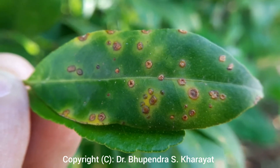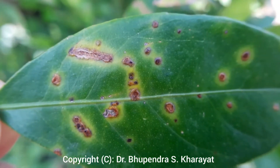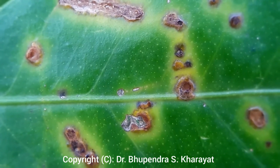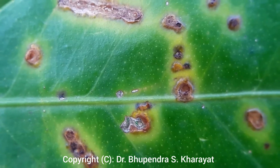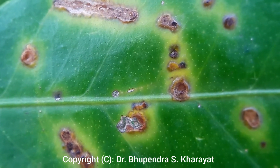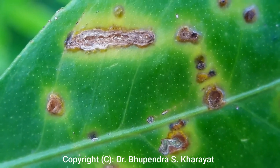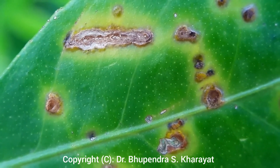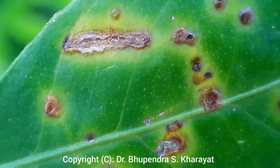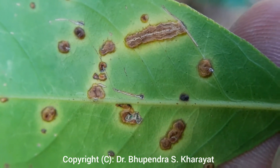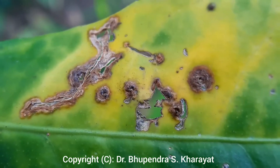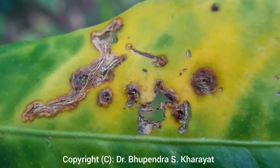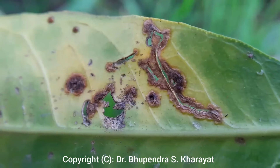Citrus canker disease is spread by an insect, the Citrus Leaf Miner, Phyllocnistis citrella, within the plants or between the plants. As citrus plants are perennial in nature, these cankerous lesions on the stems ensure the long-term survival of this bacterium.